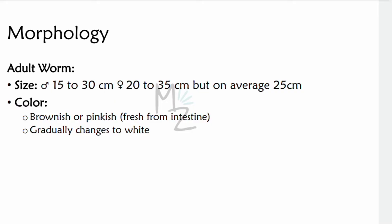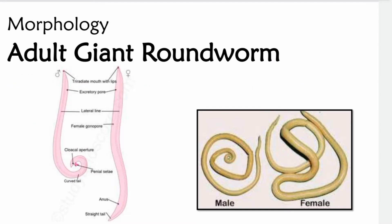The male measures 15 to 30 cm while the female measures 20 to 35 cm, but on average both are about 25 cm. They are brownish and pink when freshly obtained from the intestine, but their color gradually changes to white. The male has a curved posterior end and the female has a straight posterior end; both taper at the anterior and posterior ends.